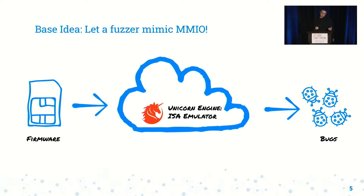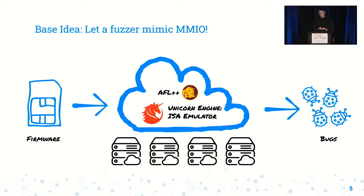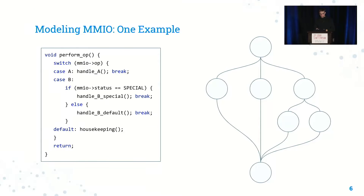A simple approach for emulating this is to run the firmware in an emulator and, whenever an MMIO access is encountered, have a fuzzer provide some input. An interesting property of this setup is that we do not need the real hardware — we can run this on general-purpose compute resources, spin up cloud instances, and scale to high-performance clusters, making it very scalable. However, this approach may not be quite feasible for meaningful testing as-is.